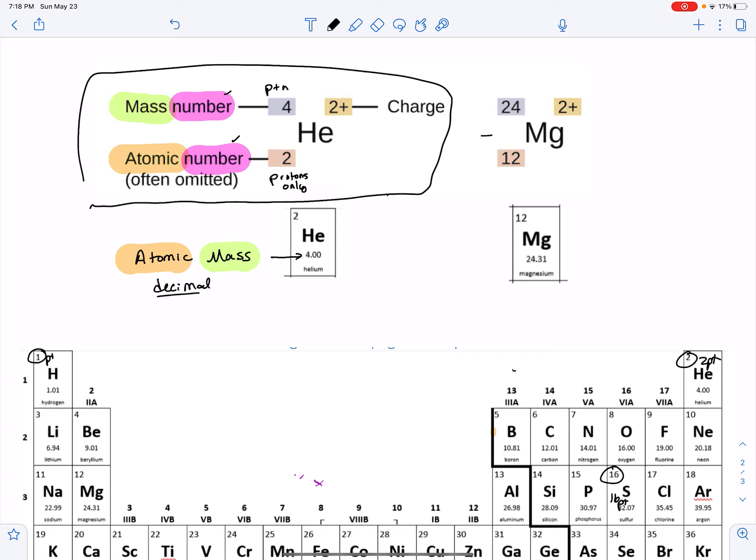Now this number right here with the decimal, this will have decimals, that number is the atomic mass. Now the lower number here actually also comes from the periodic chart and it's right here.